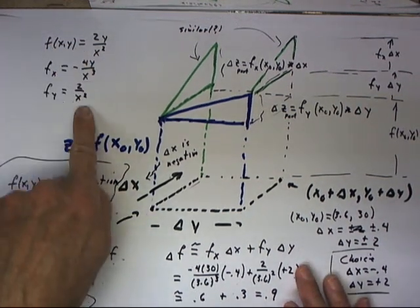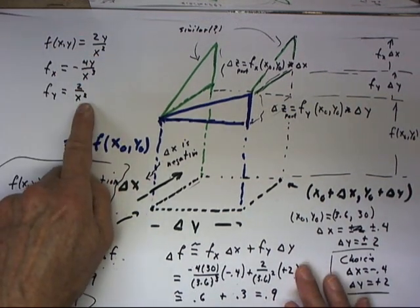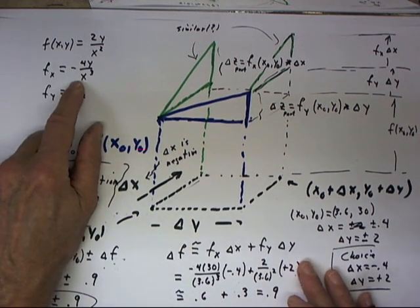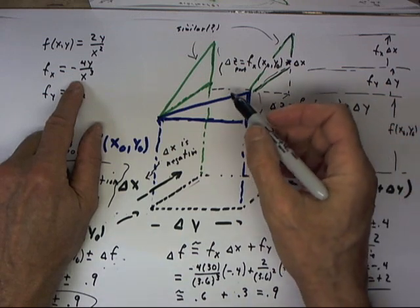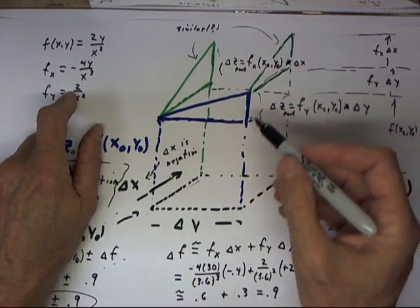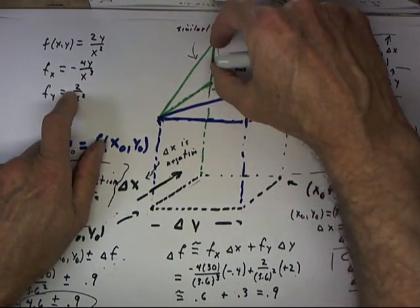We've written down the f function and its derivatives just as a reminder. fx, the x derivative, is negative, so that when we multiply fx by delta x, we're going to get a positive value.